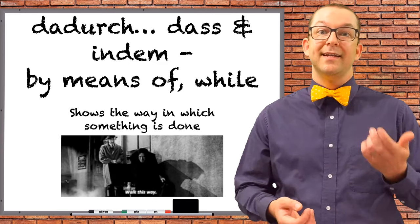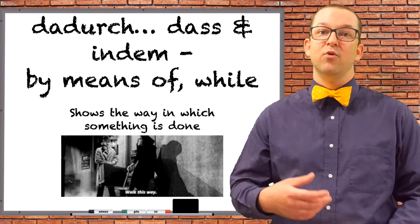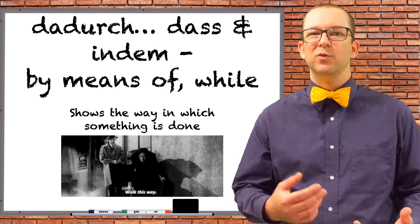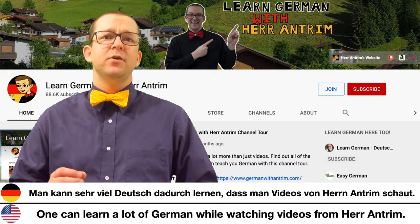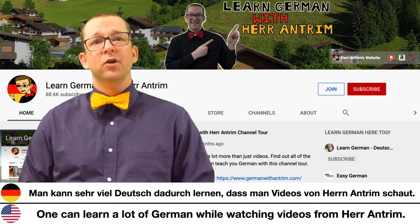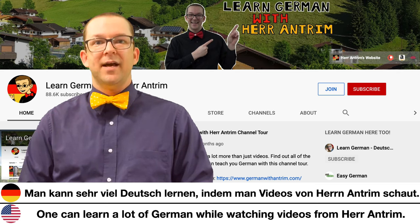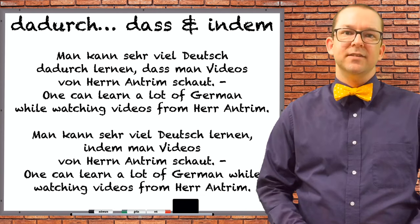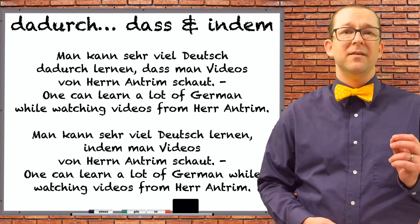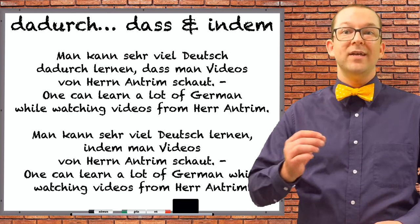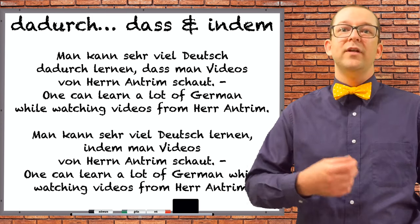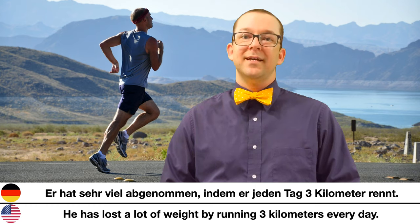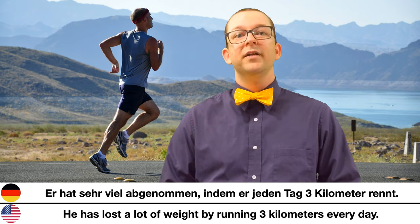If you use dadurch in the main clause and dass to connect the subordinate clause, it means the same thing as the subordinating conjunction indem. Both mean something like 'by means of.' You will often see them translated as 'while,' but the translation doesn't fully capture what's happening. Examples: 'Man kann sehr viel Deutsch dadurch lernen, dass man Videos von Herrn Antrim schaut.' and 'Man kann sehr viel Deutsch lernen, indem man Videos von Herrn Antrim schaut.' — One can learn a lot of German while watching videos from Herrn Antrim. The true meaning is 'by means of,' showing the medium through which the action takes place. 'Er hat sehr viel abgenommen, indem er jeden Tag drei Kilometer rennt.' — He has lost a lot of weight by running three kilometers every day.